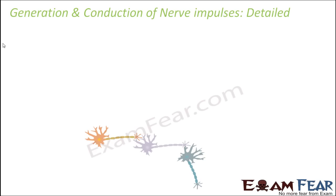When I say generation of nerve impulse, we will see how the nerve impulse gets generated when a stimulus is received by a dendrite, and how an electric impulse is generated. We will also see how that electric impulse is conducted from the dendrite to the axon endings of a neuron — how it is transmitted within one neuron. This is very important to understand because it explains the entire basics of the nervous system.